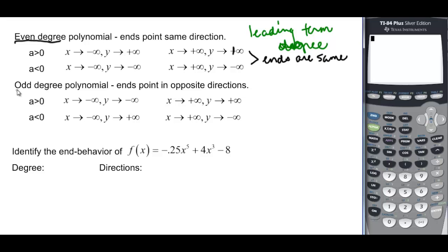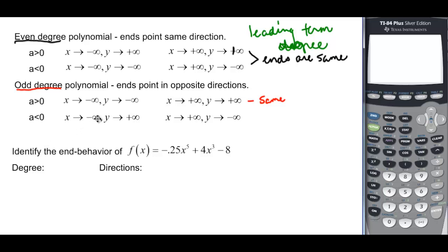What about odd degree? That's our leading term degree. If a is greater than 0, then as x goes to negative infinity, so does y, and as x gets very large, y also gets very large — they go in the same direction as x. If a is less than 0, so you've got a negative leading coefficient, then as x gets very small, y will be very large, and as x gets very large, y will get very small. So these are opposite.